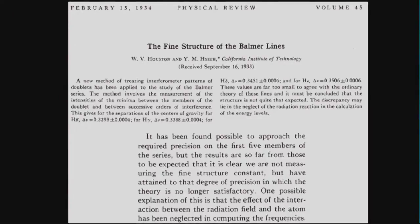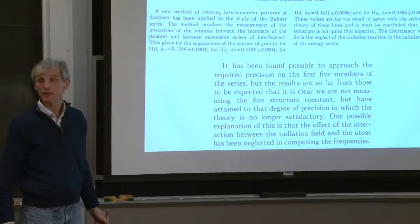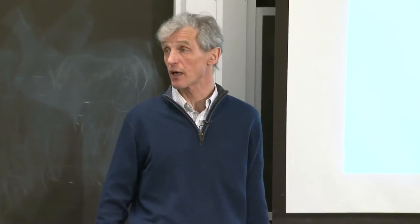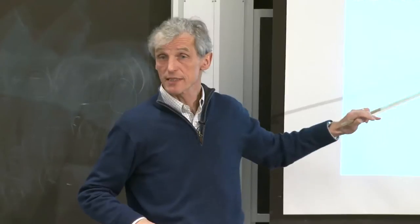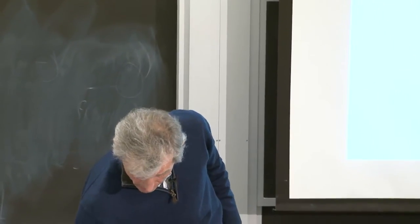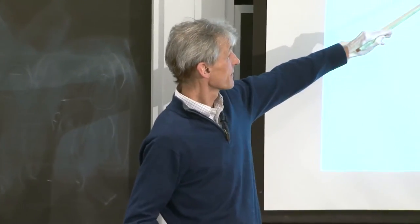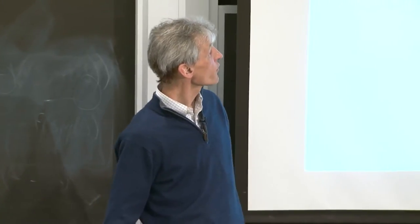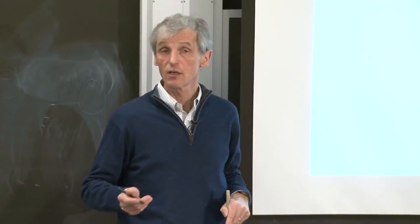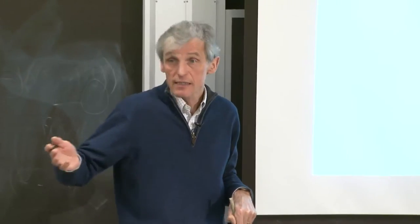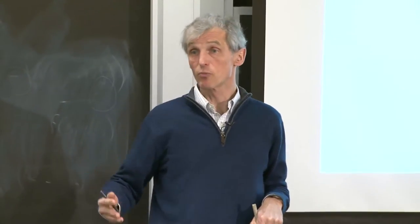This paper from 1933 — 15 years before the Lamb shift — says that one possible explanation for discrepancies in the Balmer lines is that the effect of the interaction between the radiation field and the atom cannot be neglected. That's QED: you cannot just calculate the structure of the hydrogen atom from the Coulomb field; you have to include all modes of the vacuum. This insight was there already in 1933. The same year, another paper titled 'On the breakdown of the Coulomb law for the hydrogen atom' speculated that the Coulomb law will not be valid at very small distances — which is ultimately what QED radiative corrections, the Lamb shift, and vacuum polarization bring about.